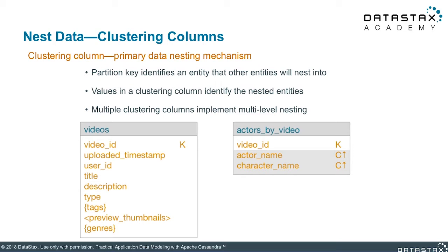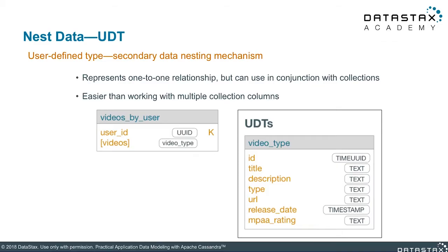The partition key identifies the entity that other entities nest into, while the clustering columns identify the nested entities — we have actors identified by videos. Depending on your situation you may want to be a little more lightweight and use user-defined types, which allow you to nest a few values inside of a single column in a table. Usually this occurs when you have a one-to-one relationship, but you can also have lists or maps of user-defined types within a single column.